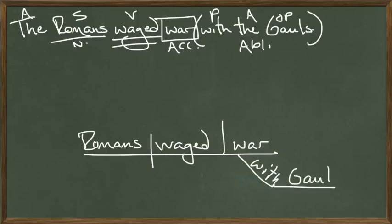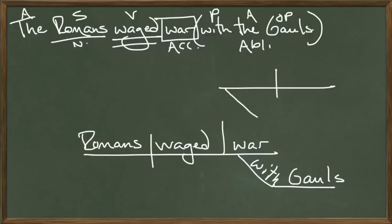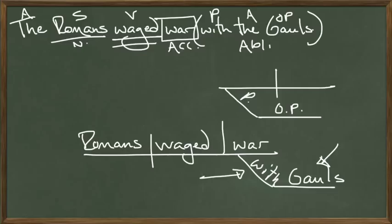Gauls go on the object of the preposition line here. When you have a prepositional phrase, you find out where it's going to go. If it's describing the subject, we put a preposition line underneath the subject. The preposition line is a slanted line, and then there's a straight line off the slanted line — that's where the object of the preposition goes. So 'with' is the preposition, and 'the Gauls' is the object of the preposition. Now we add the article adjectives: 'the Romans waged war with the Gauls.'